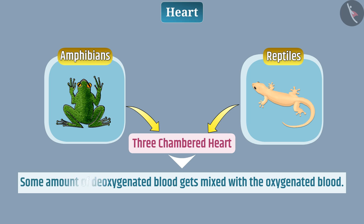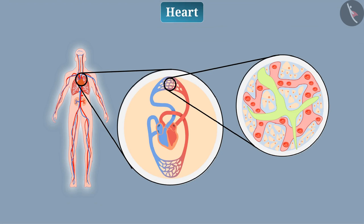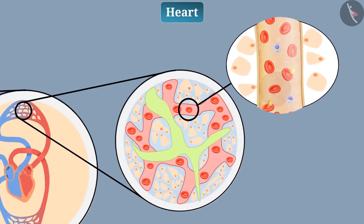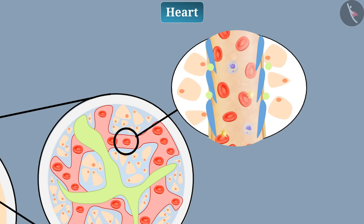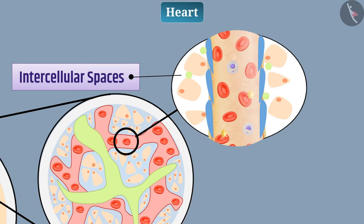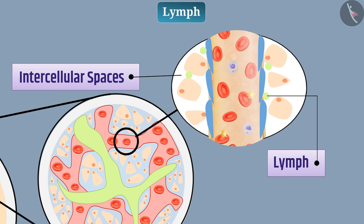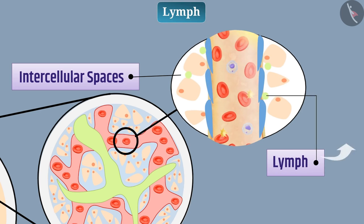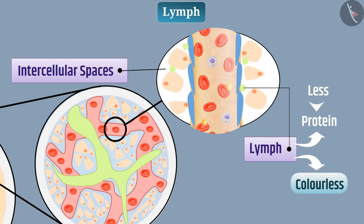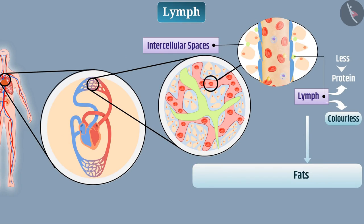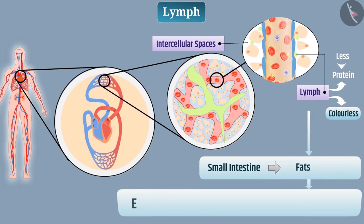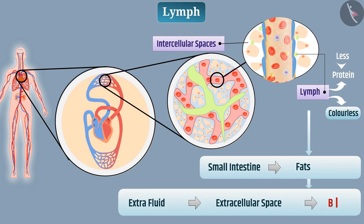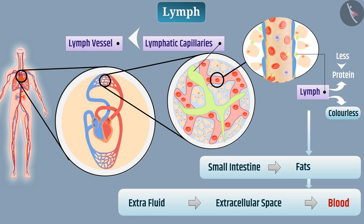Lymph: sometimes plasma proteins and cells present in the blood migrate from pores of the capillary wall into the intracellular spaces of the tissue. This fluid is collectively called lymph. Lymph is similar to plasma but has less protein content and is colorless. It carries digested fat absorbed by the small intestine and carries extra fluid from extracellular spaces back into the blood through lymphatic capillaries and lymph vessels, which open into veins.